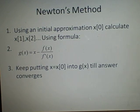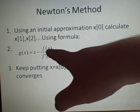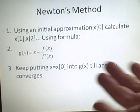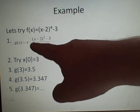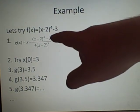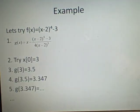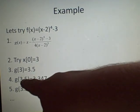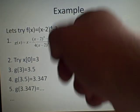Newton's method is a very nice one, similar to the previous. Using just one initial approximation, we calculate following values using the formula: g(x) = x minus f(x) over f'(x). For our same f(x), we differentiate to get 4 times (x minus 2) cubed, so we have f over f'. We want the second root, so we try x = 3. g(3) gives 3.5; putting 3.5 back in gives 3.347. We keep substituting and we're converging toward the root.